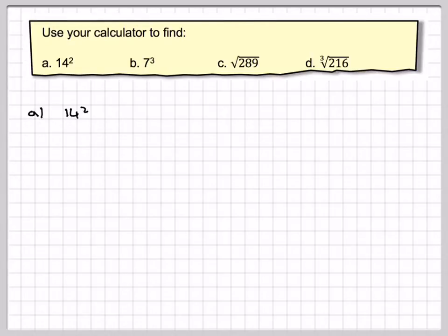So, first one is 14 squared. Let's remind us what this actually means. What we're trying to find here is 14 times 14, and we could type 14 times 14 into a calculator. However, there is a more direct way to do it using the calculator.